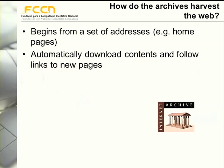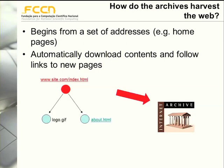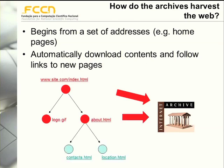How do web archives harvest the web? They gather a set of web addresses — it can be a list of home pages of several interesting websites to be archived — and then they automatically download contents and follow links to new web pages. For instance, a web archive collects a home page, stores it, then finds it links to an image and a new page, collects those too, and this process is repeated automatically to collect information from the web.